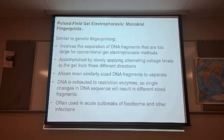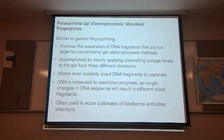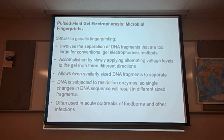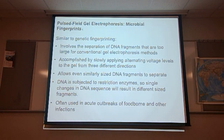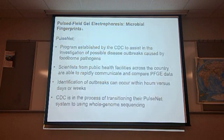Pulse-field gel electrophoresis, or microbial fingerprinting, is similar to DNA fingerprinting. It involves separating DNA fragments too large for conventional gel electrophoresis by slowly applying alternating voltage levels to the gel from three different directions — front to back, left to right, and up and down — allowing similarly sized DNA fragments to separate. The DNA is then subjected to restriction enzymes so that single changes in DNA sequences result in different sized fragments. These are often used in acute outbreaks of foodborne diseases and other infections.